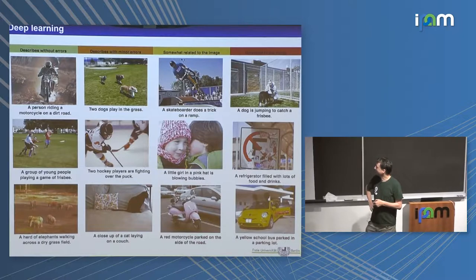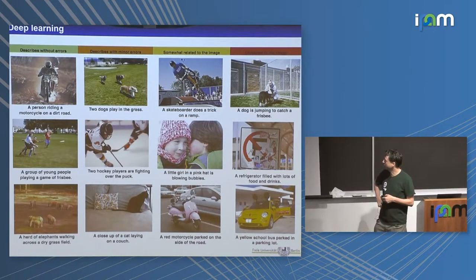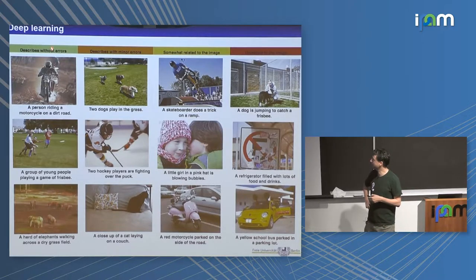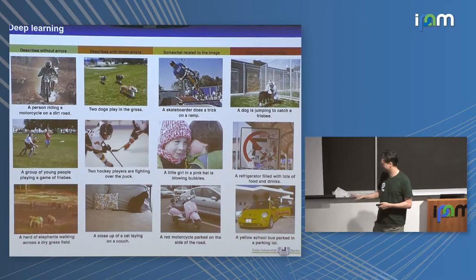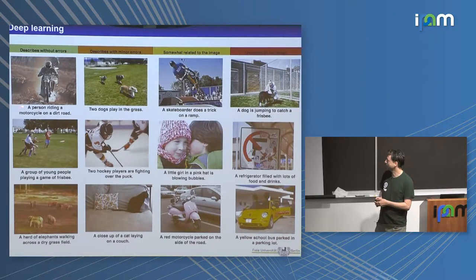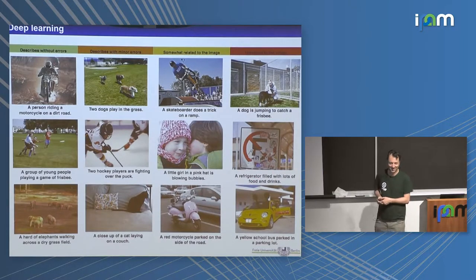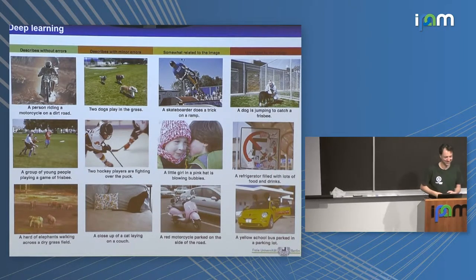This is an example of recurrent neural network-based image-to-text generation: you input an image and the network generates text describing what is in the image. This is a fairly old example, not state of the art, but you can see really impressive successes — like 'a person riding on a motorcycle on a dirt road' or 'a refrigerator filled with lots of food and drinks' — but you get catastrophic failures as well.